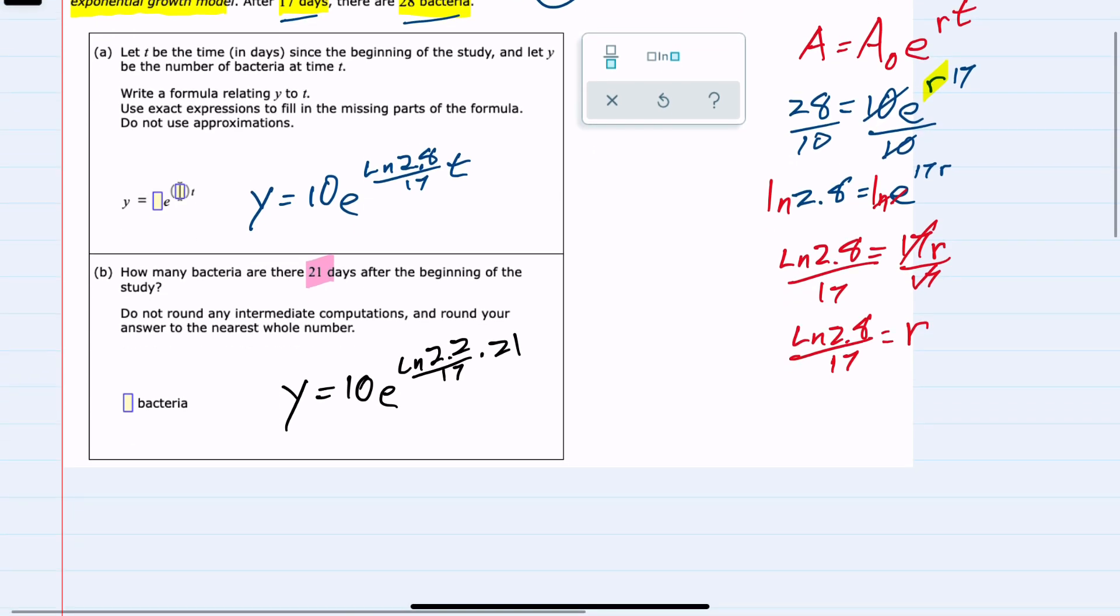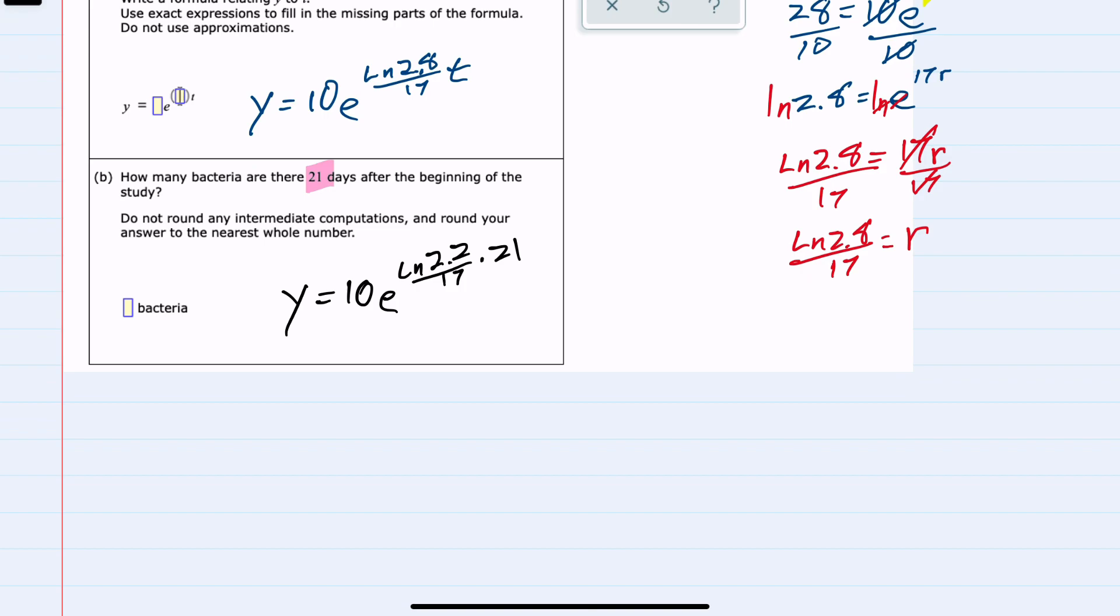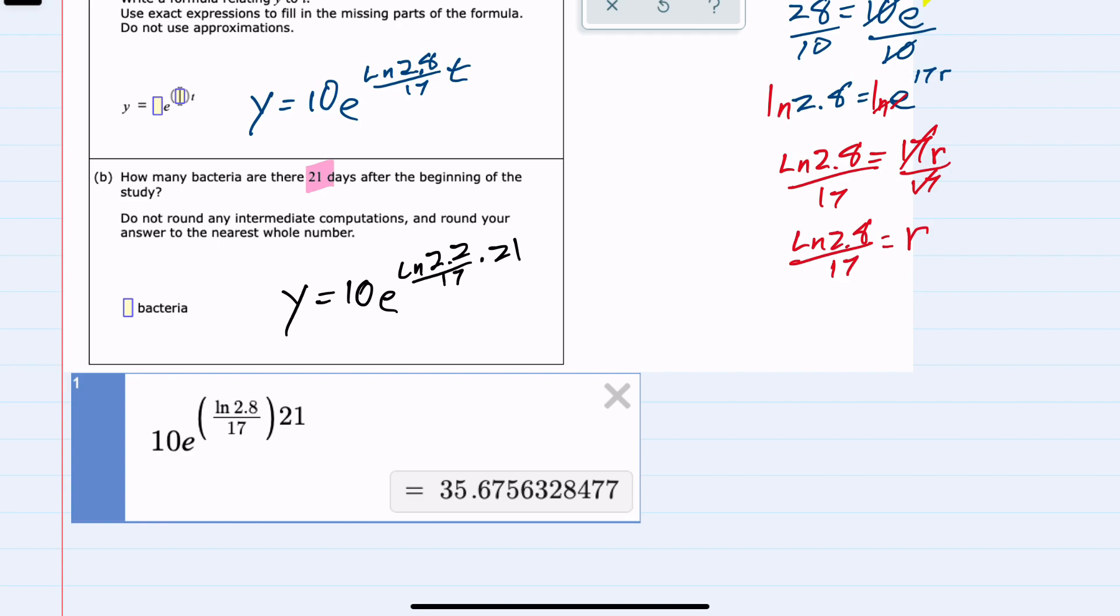We can use a tool like Desmos to avoid rounding errors from intermediate computations. Since we're asked to round to the nearest whole number, the solution is 36 bacteria after 21 days.